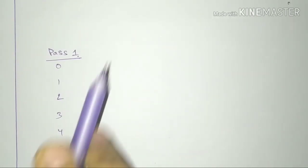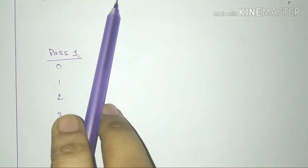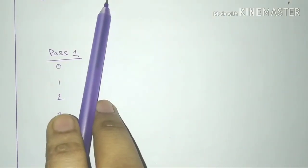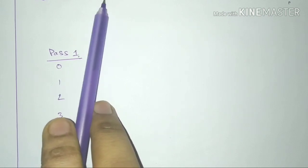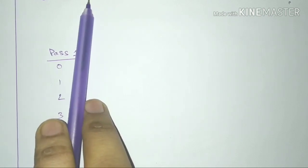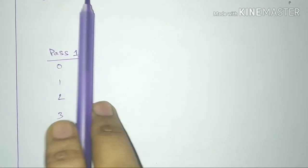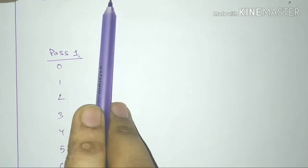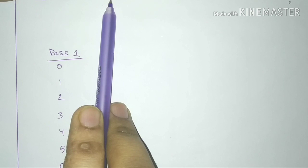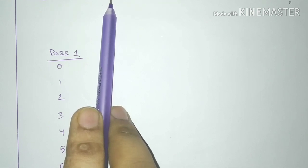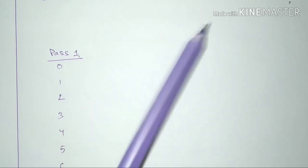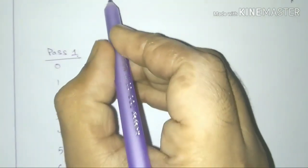The first step uses the Least Significant Bit (LSB), and the last step uses the Most Significant Bit (MSB). The least significant digit is the last digit of the value.